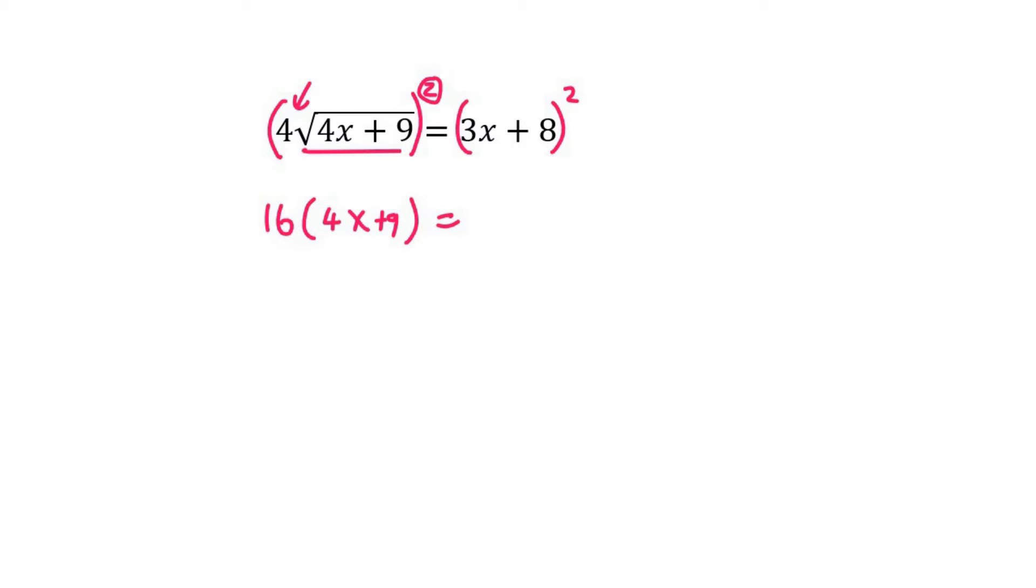Then a common mistake that students make is over here they just say 9x squared plus 64. If you've just done that it's okay, it's normal, a lot of students do that. But what you need to remember is that it's a double bracket. So you've got to go like that and like that.